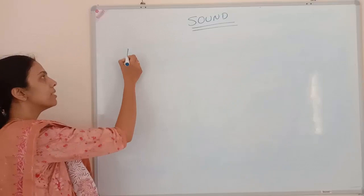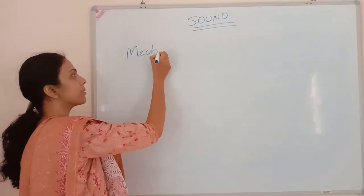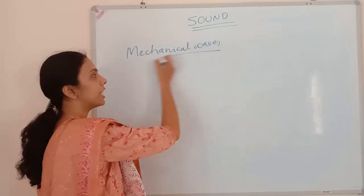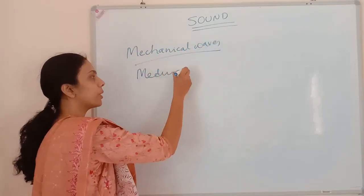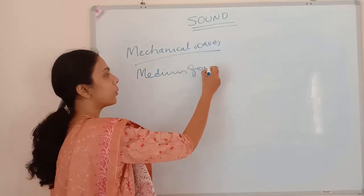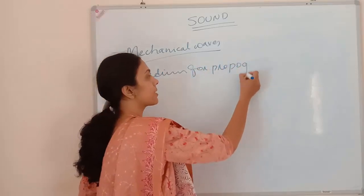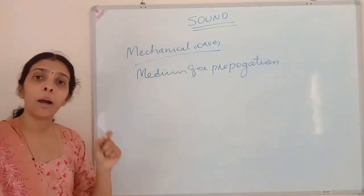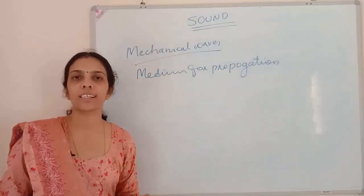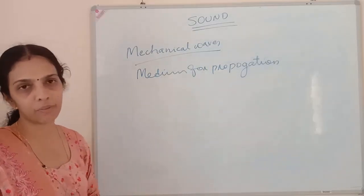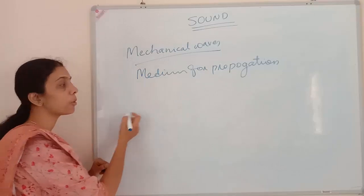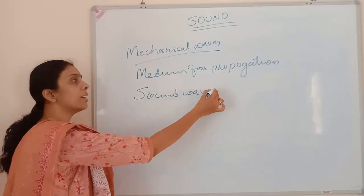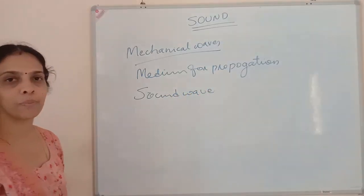Mechanical waves: waves which require a medium for propagation are called mechanical waves. So sound waves are mechanical waves because they need a medium for propagation.